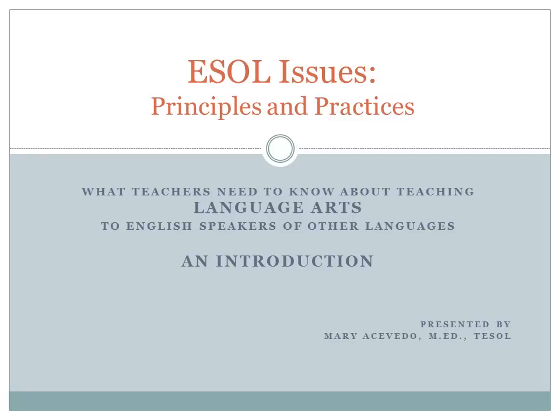Before we begin, it's important to know how and how not to refer to these students. In many government documents, you will see the label LEP, which stands for Limited English Proficient. This is not the best way to refer to these students because this label is not person-first language — it has negative connotations because it focuses on what a student cannot do. The best way to refer to this group of students is ELL, which stands for English Language Learner.